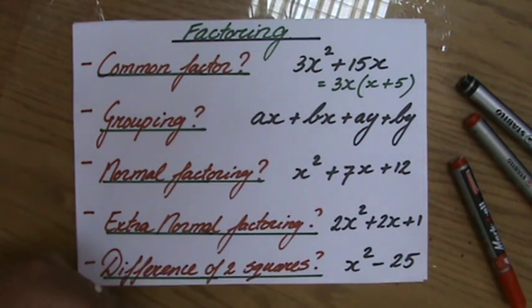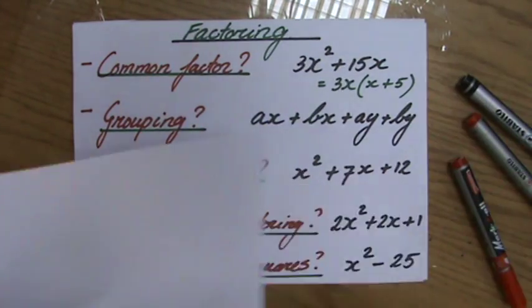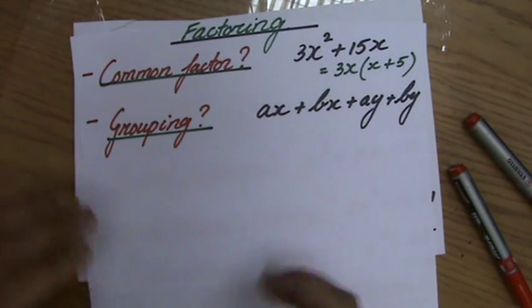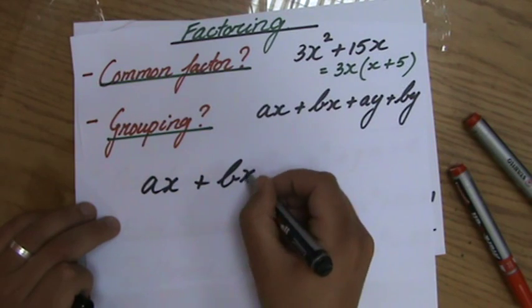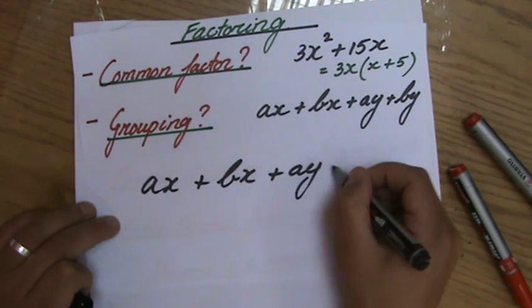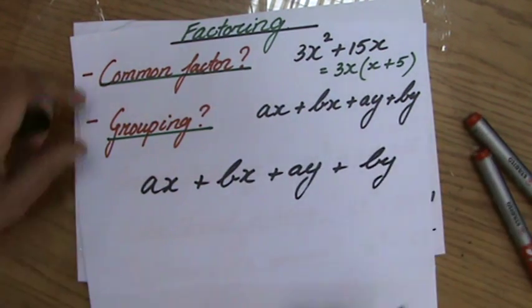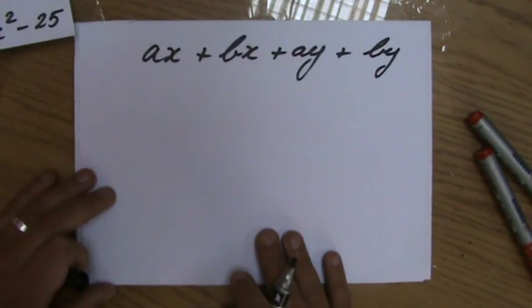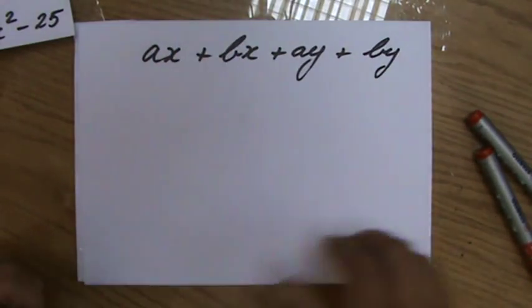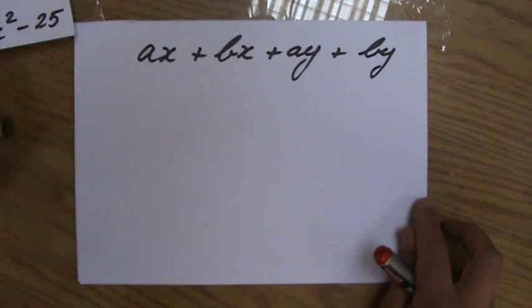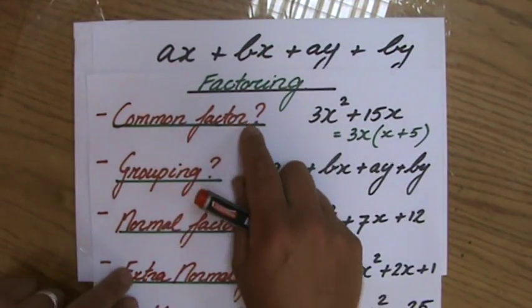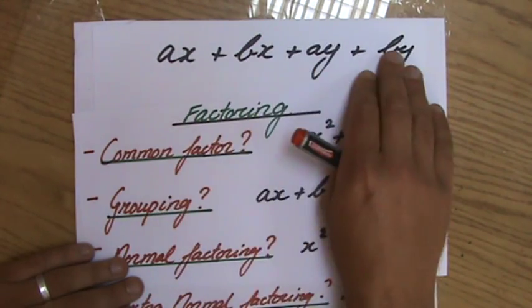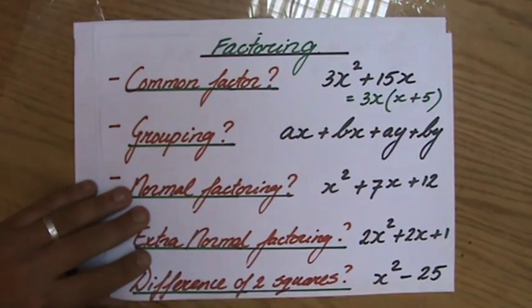So now we are going to solve this particular question. Then we're going to have a look at some more example questions in the next video. Don't worry. It's not going to take ages. This one. Let me just copy it. Ax plus Bx plus Ay plus By. The question is, factorize it completely. Factorize the following expression completely. First of all, you ask yourself always the question: is there a common factor? Is there a common factor for all four terms? No, there's not.